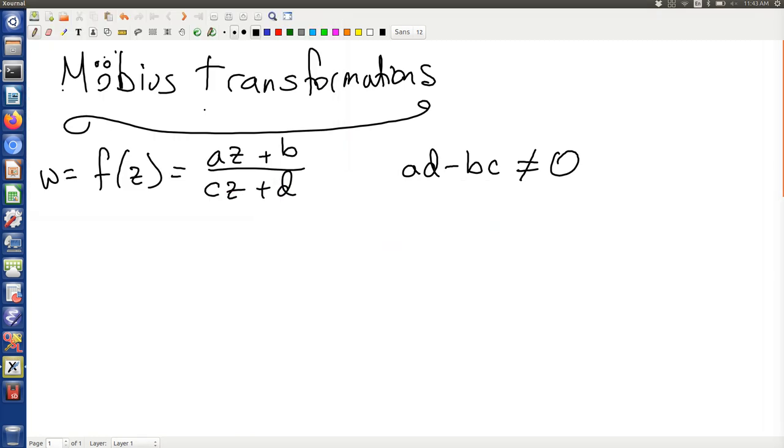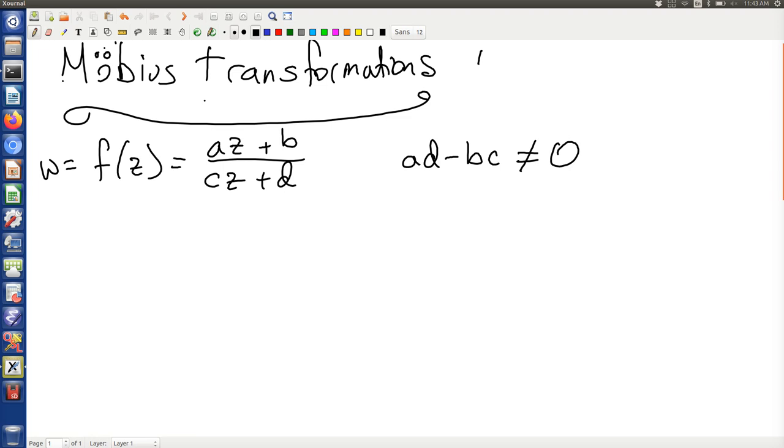This video is about Möbius transformations, and they are transformations of the form shown on the screen here. You will notice that it has a numerator and a denominator. They're essentially fractional linear transformations, because it's a fraction of two linear transformations, but they're very different.